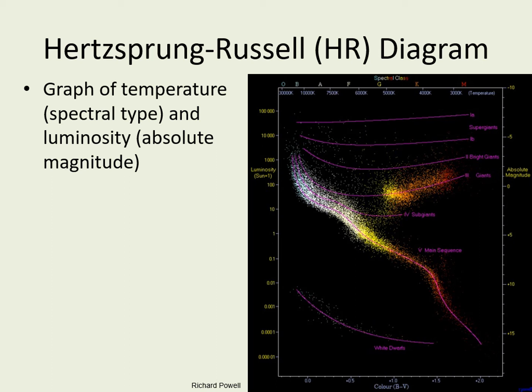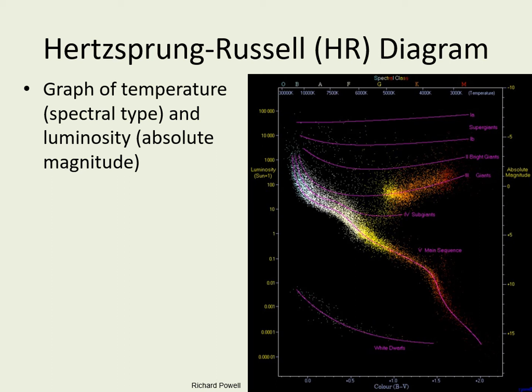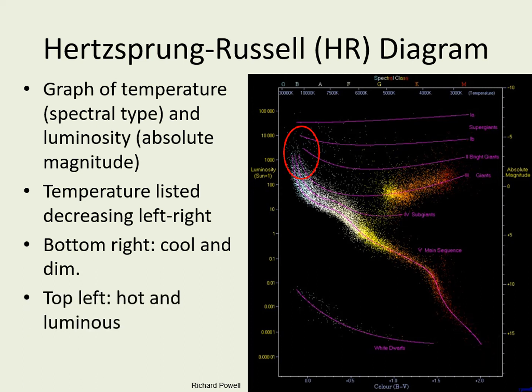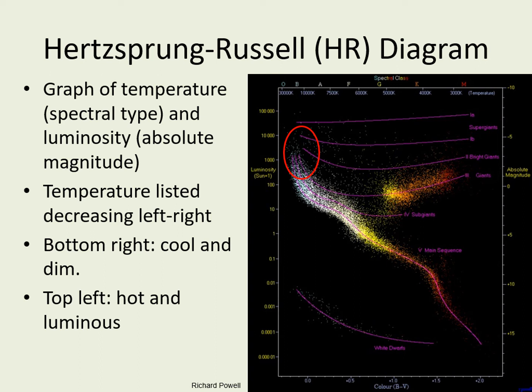Here's what an HR diagram looks like. Notice that the vertical axis can be listed as either luminosity or absolute magnitude — and of course, smaller magnitude means brighter. The horizontal axis is listed with hot blue O stars on the left side, while cool red M stars are on the right side. This is backwards if you're thinking of a numerical measurement of temperature, so stars on the bottom right are cool and dim, while stars at the top left are hot and luminous.